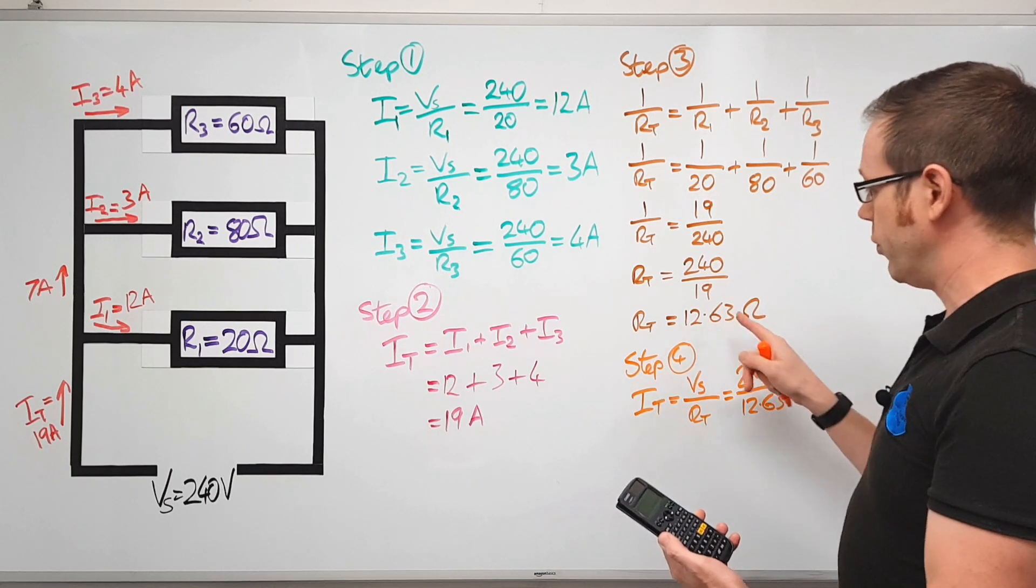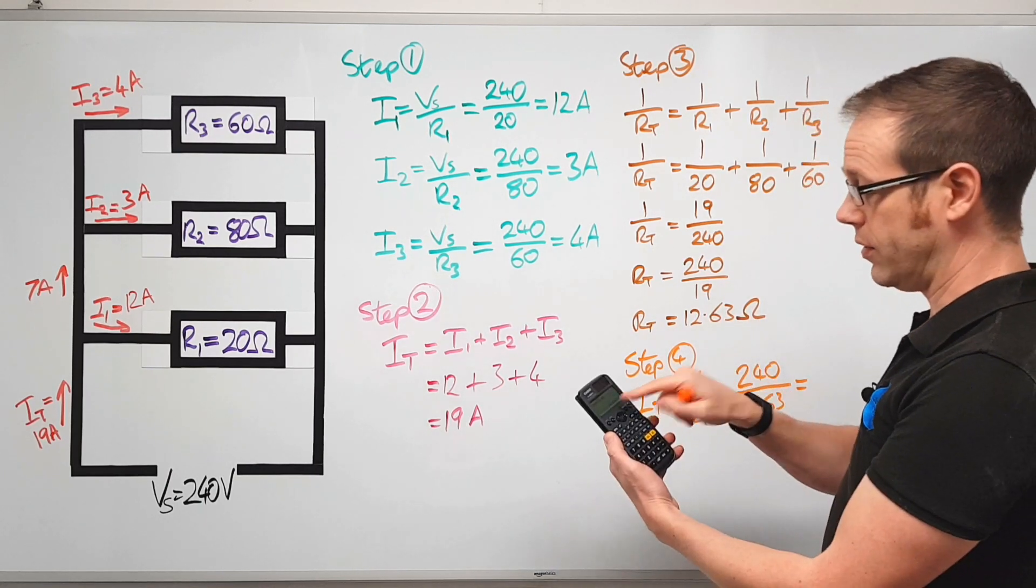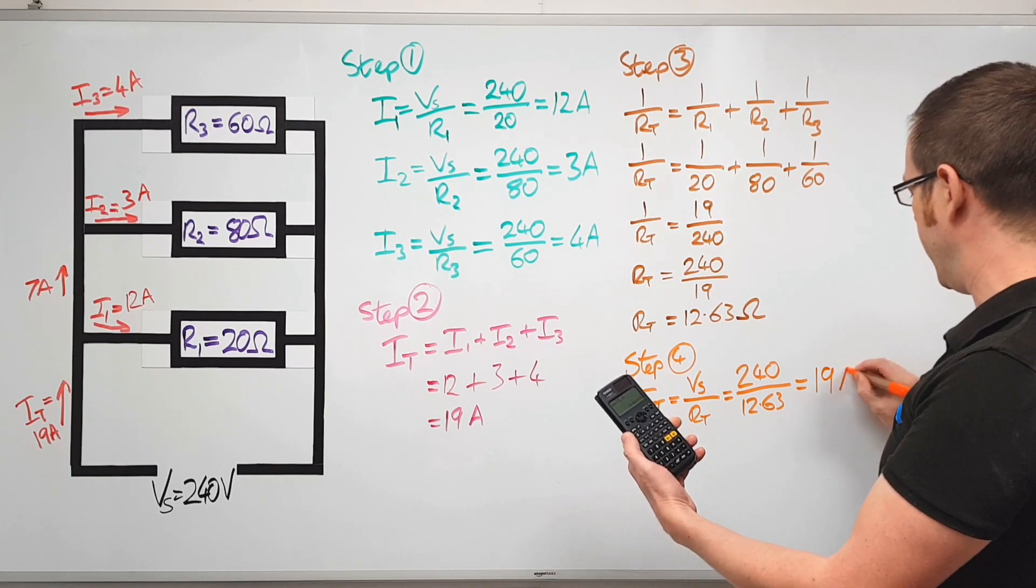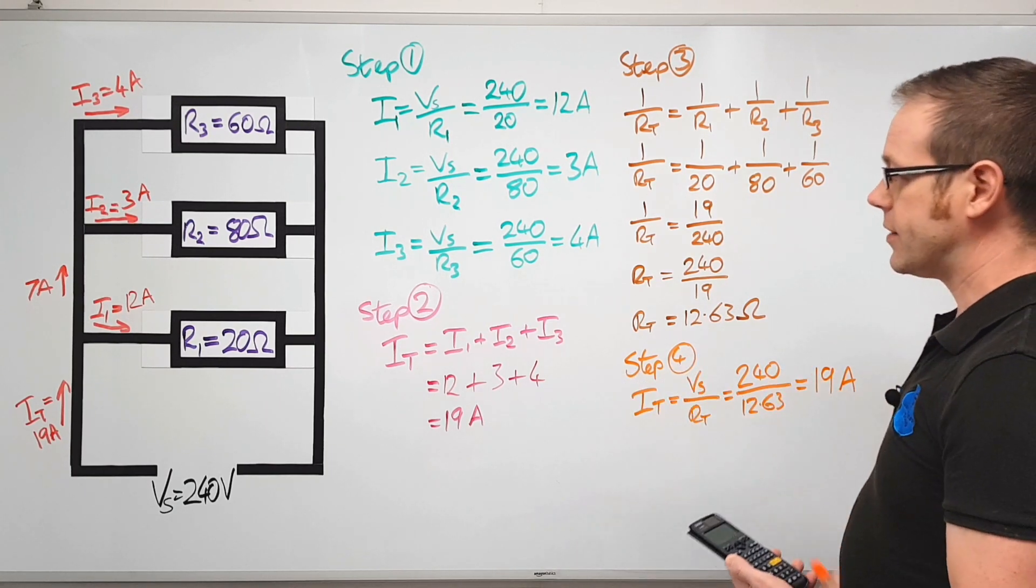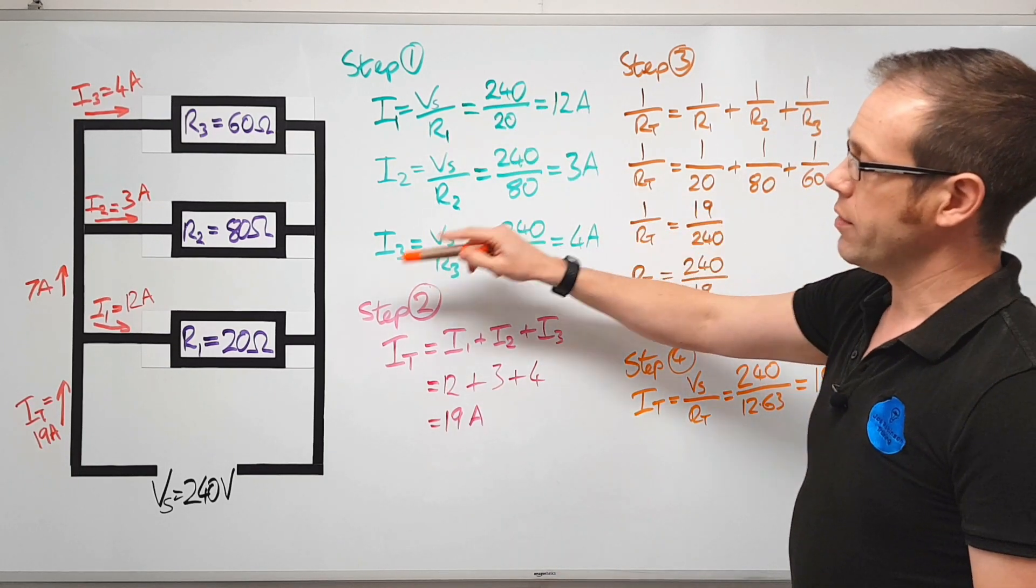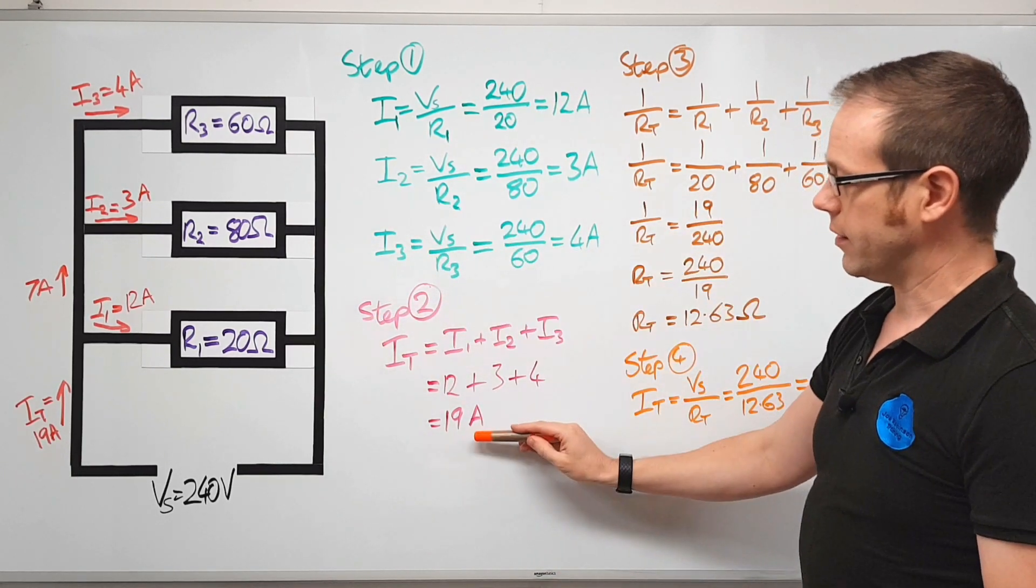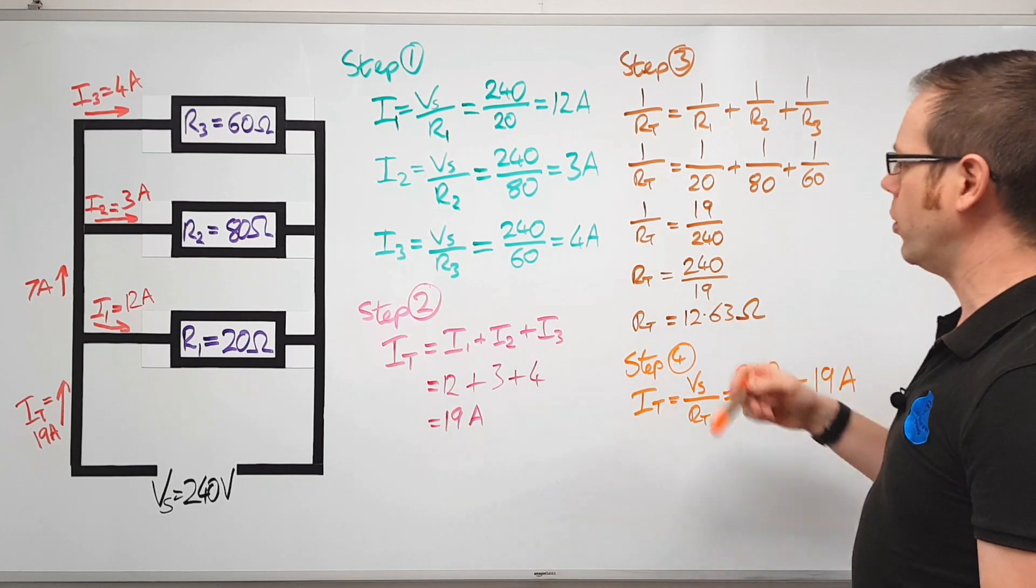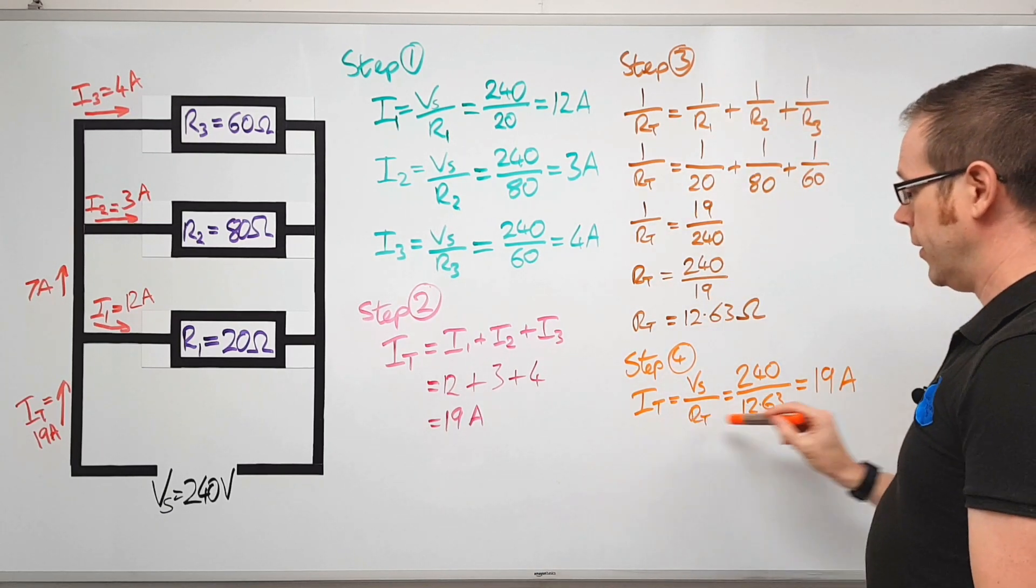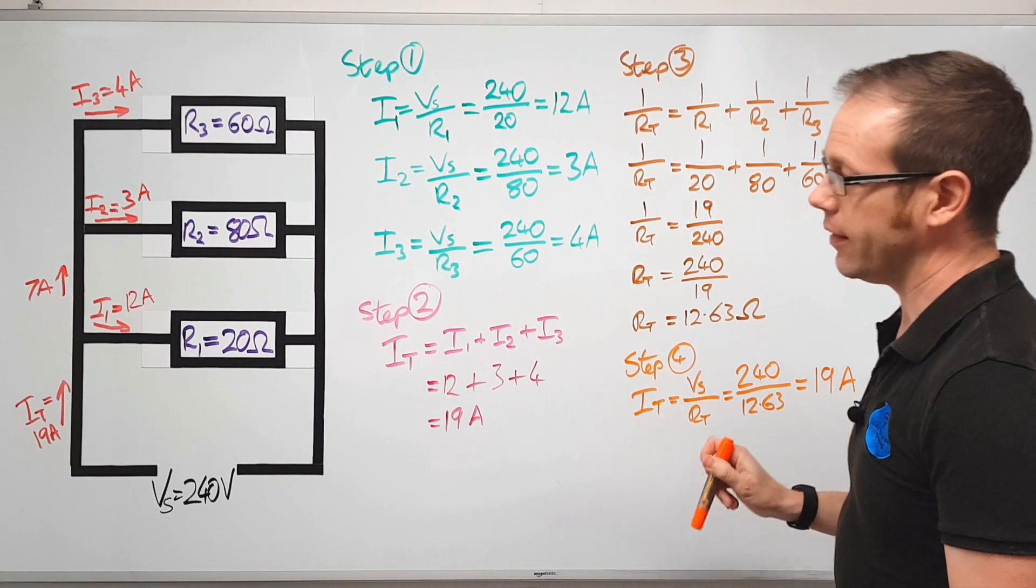However if we take the same principle, we rounded that to two decimal places, if we round this to two decimal places then we've actually got 19 amperes again. So you can see there's kind of two ways of doing this. You can either find all the individual currents that flow into the circuit, add them together to find the total current, or you can find the total resistance of the circuit and then use that to calculate what the total current flowing into the circuit is.